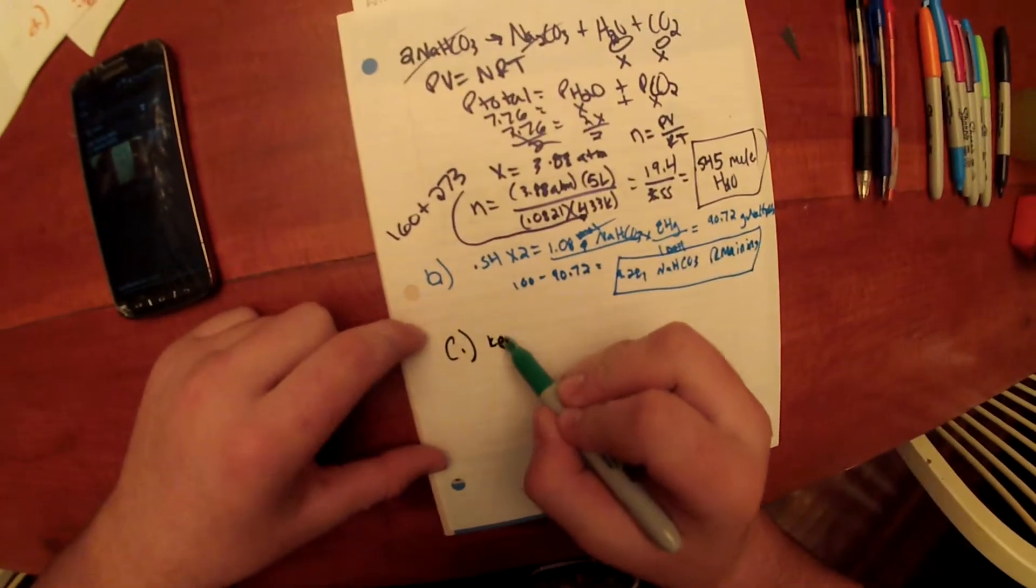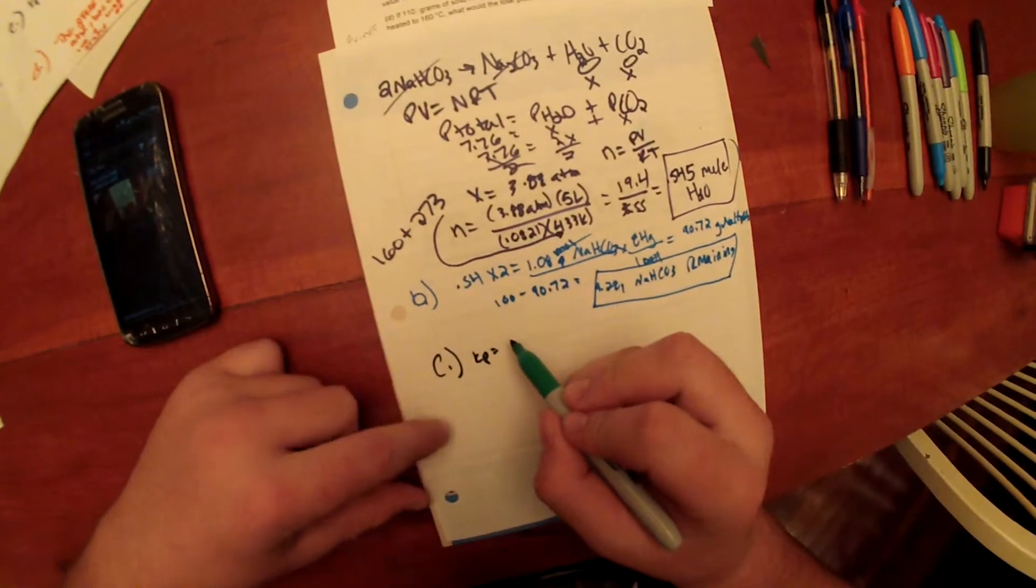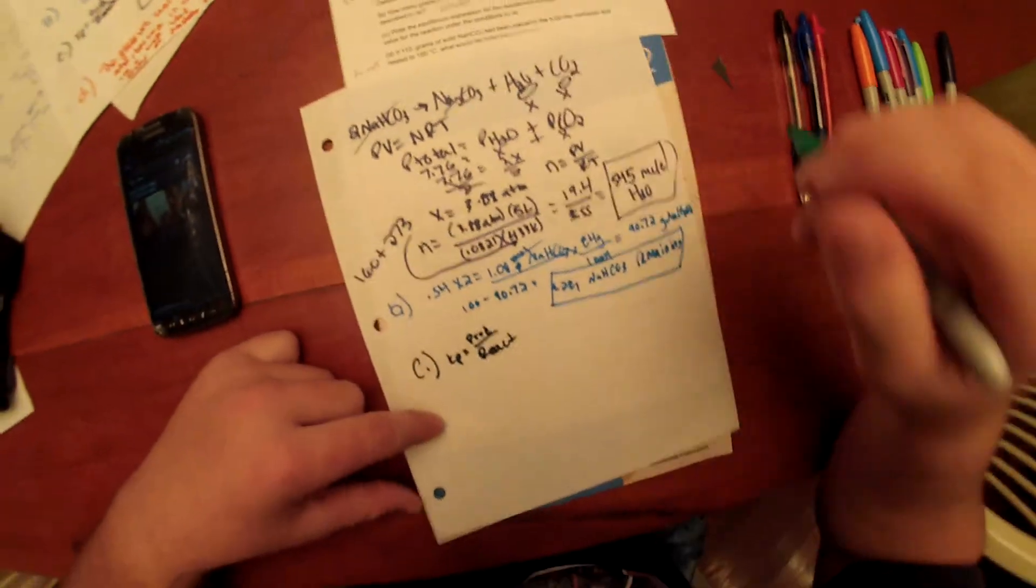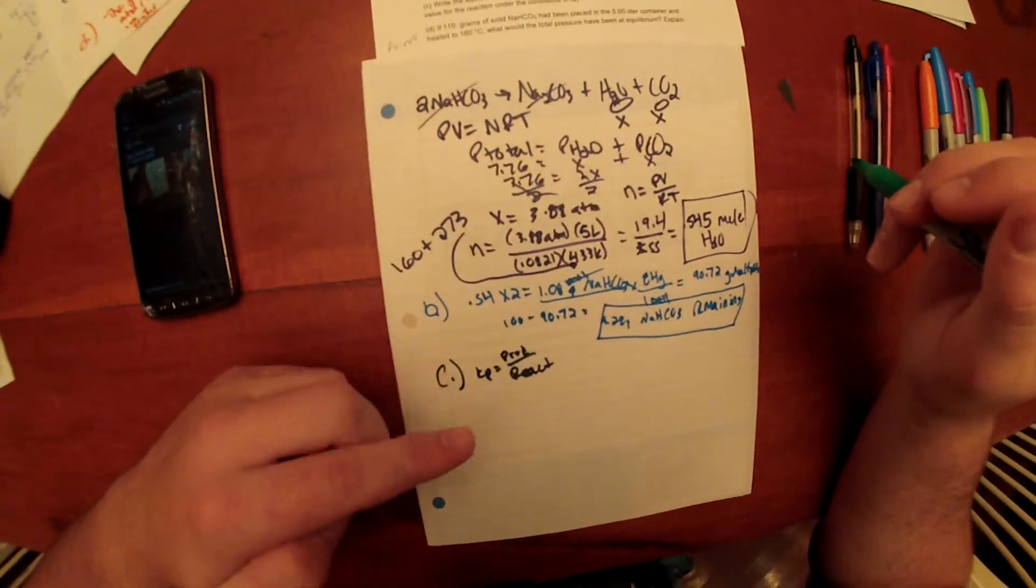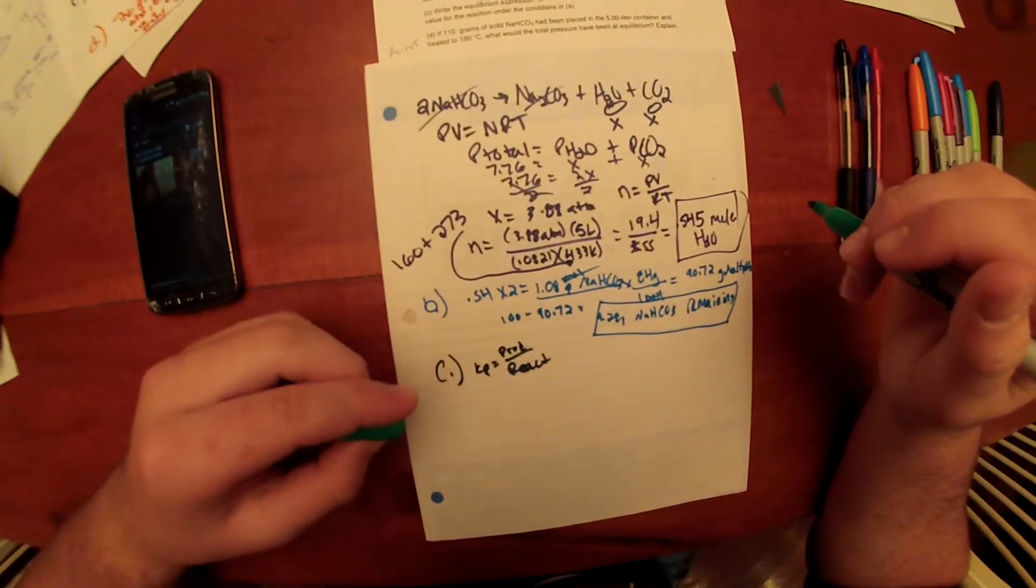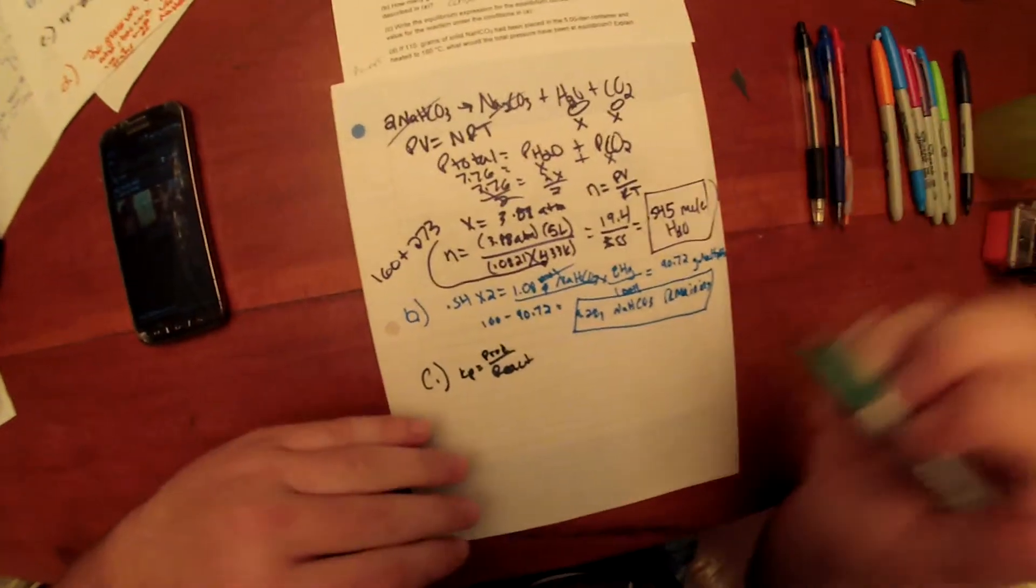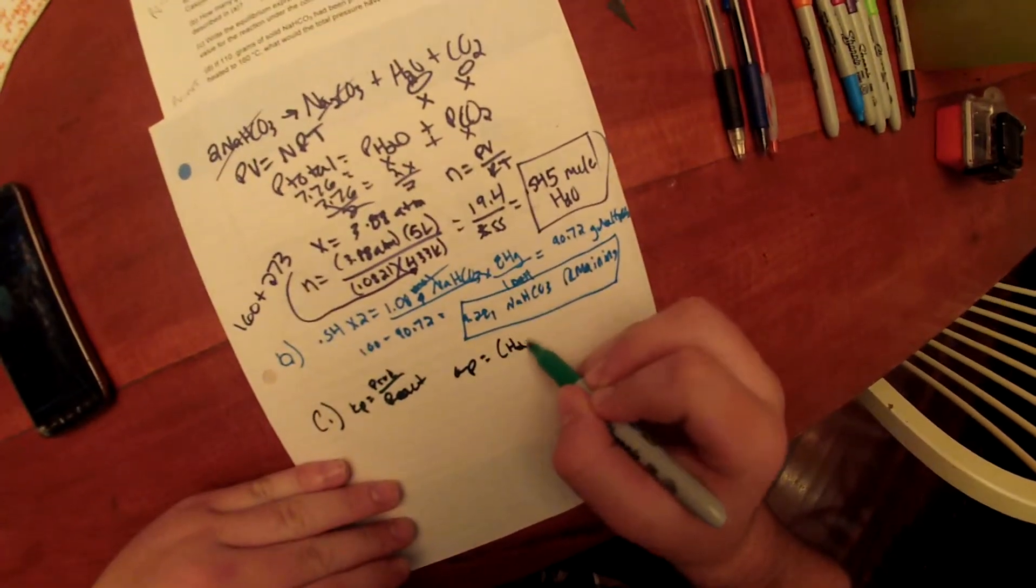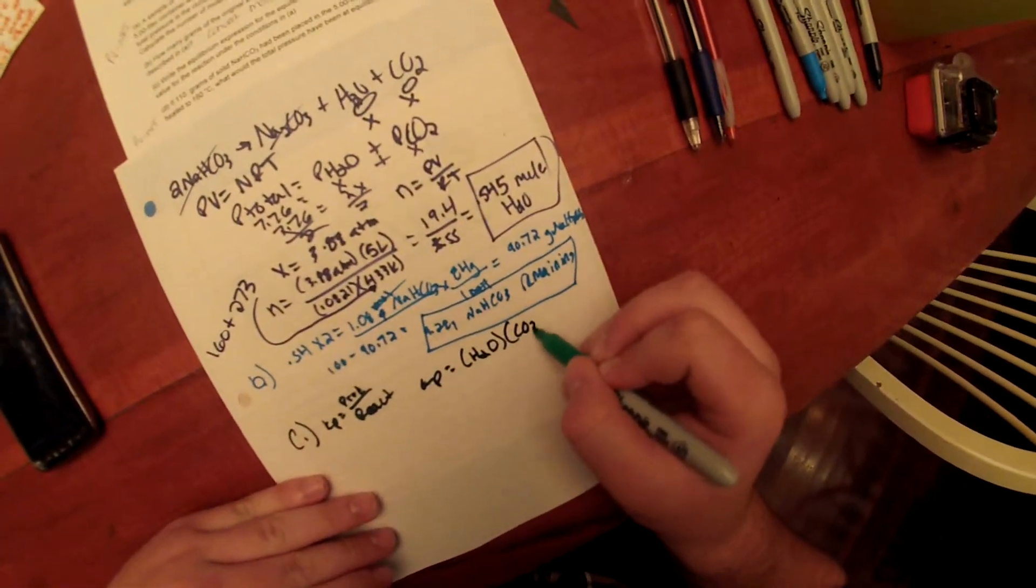Kp expression is Kp equals products over reactants. Now, we omit solids from the Kp expression. So, all that is left in for a Kp expression is H2O gas and CO2 gas, which are both products. So, it would be Kp equals H2O times CO2.